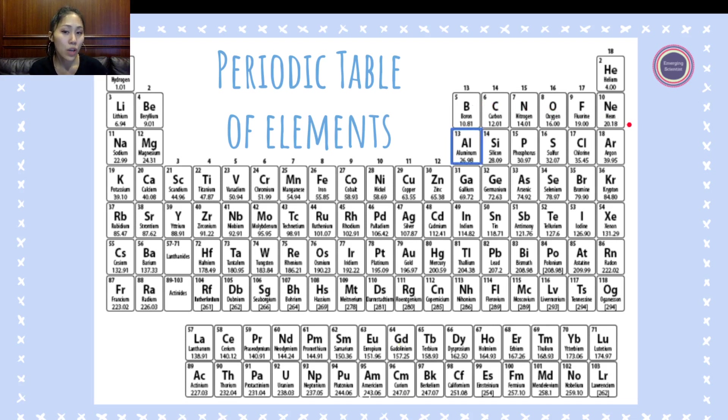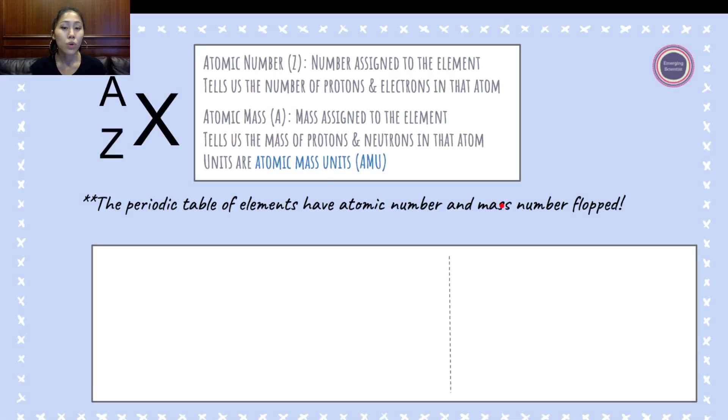Now we're going to take a look at an example. We're going to look at aluminum. Knowing what we've just learned, here is what we would do to calculate the number of protons, electrons, and neutrons based off of the atomic notation.